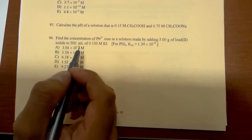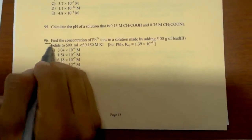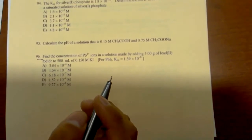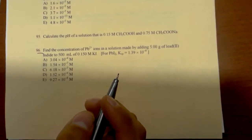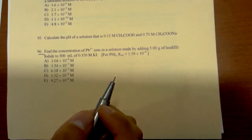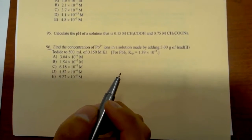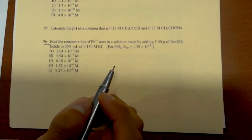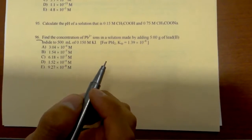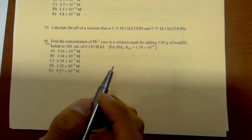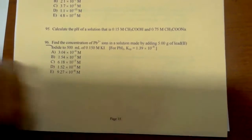Let's go to look at number 96. Find the concentration of Pb²⁺ ions in the solution made by adding 5 grams of lead iodide to 500 mL of 0.150 molar KI, and it gives us the Ksp.